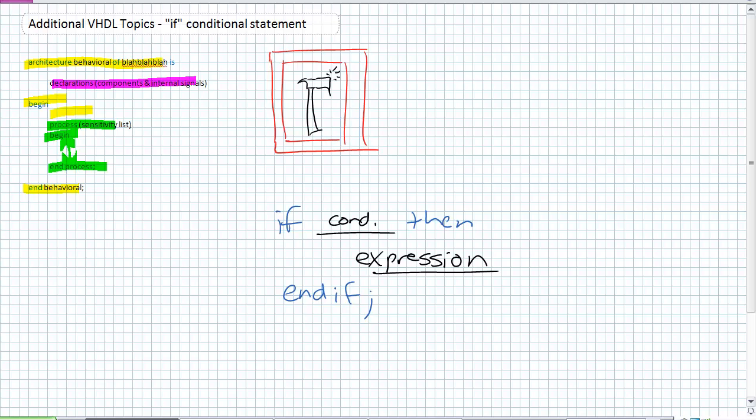Additionally, very similar to our architecture, between the architecture begin and begin for the architecture, I could potentially have declarations within that process. For example, in the previous lecture I dealt with variables. I could potentially declare a variable for this particular process. Between that beginning and the end process, we could put one of these conditional statements. And the one we're going to talk about today is an if conditional statement.